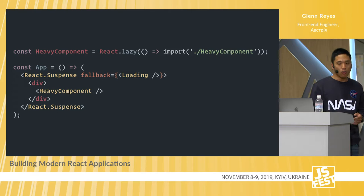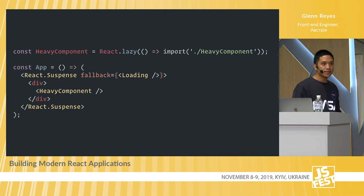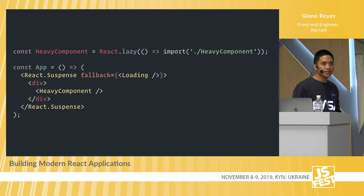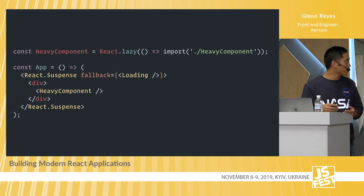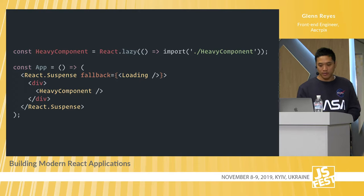Here's how to use Suspense with code splitting: you initialize your heavy component with React.lazy using the dynamic import syntax. Then in your app, you wrap with a React.Suspense component and pass it a fallback prop with a loading component — you're telling Suspense: if rendering takes longer than expected, show the loading indicator. Inside, you render the heavy component. While the heavy component is being loaded, you may see the fallback element at a certain time threshold.